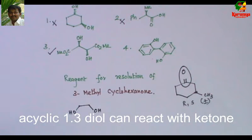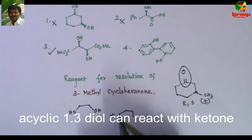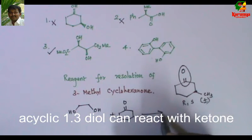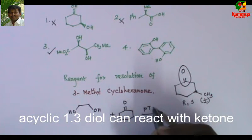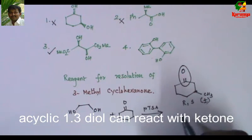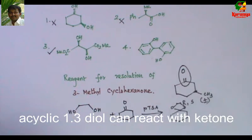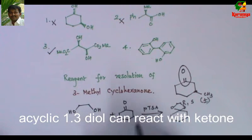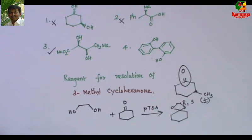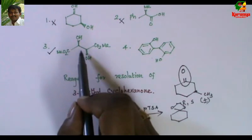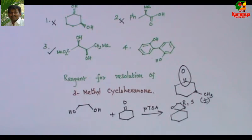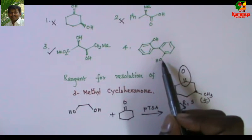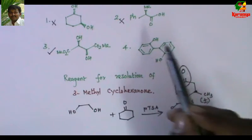If you remember, ethylene glycol is the protecting group for a ketone. Ethylene glycol reacted with cyclohexanone in the presence of para-toluenesulfonic acid gives a cyclic ketal — basically, ethylene glycol is a 1,2-diol and it reacts with a ketone to give the protected product. So this 1,2-diol will react.